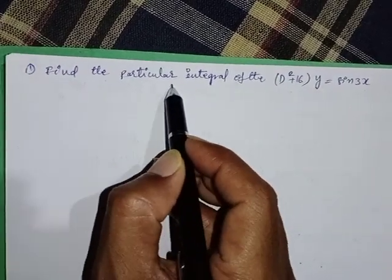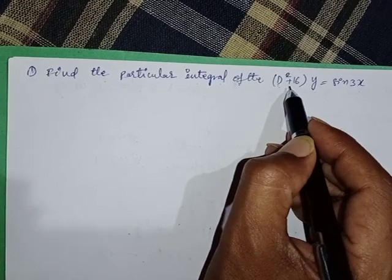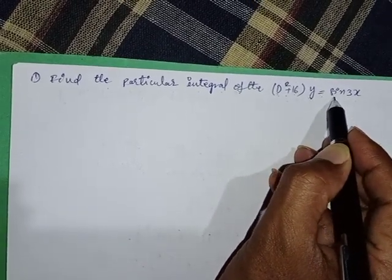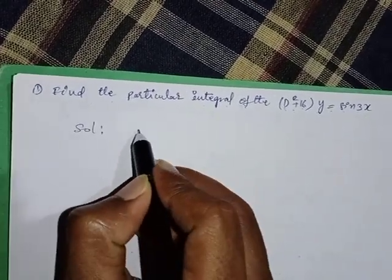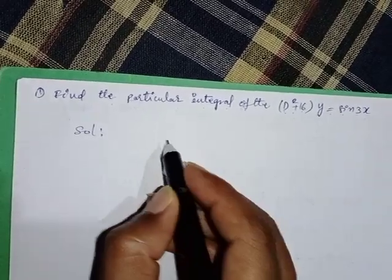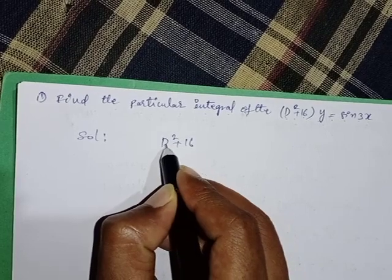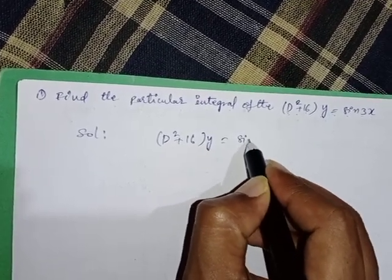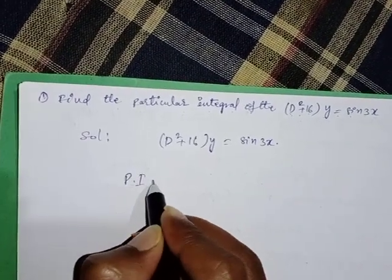Find the particular integral of (D² + 16)y = sin 3x. Here we need to find the particular integral of this given equation. First of all, write down the question: D squared plus 16 into y is equal to sin 3x.